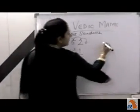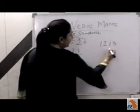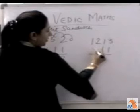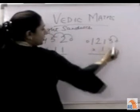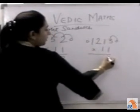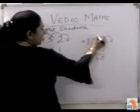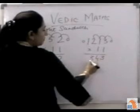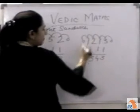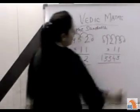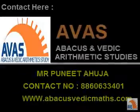If my number is 1, 2, 1, 3 multiplied by 11: I will put a 0 here and 0 here, then add the numbers in pairs — 0 plus 3 is 3, 3 plus 1 is 4, 1 plus 2 is 3, 2 plus 1 is 3, 1 plus 0 is 1. So 1, 3, 3, 4, 3 is my answer.